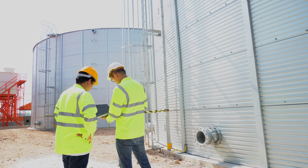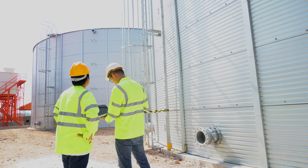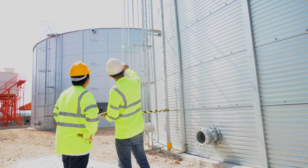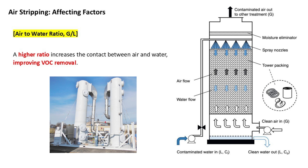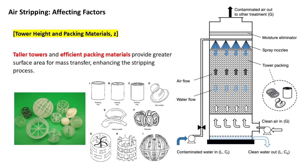The effectiveness of an air stripping system depends on several factors. First, the air-to-water ratio — the ratio between the air loading rate and the water loading rate. A higher ratio increases the contact between air and water, improving VOC removal. Second, tower height and packing material: taller towers and efficient packing materials provide greater surface area for mass transfer, enhancing the stripping process.